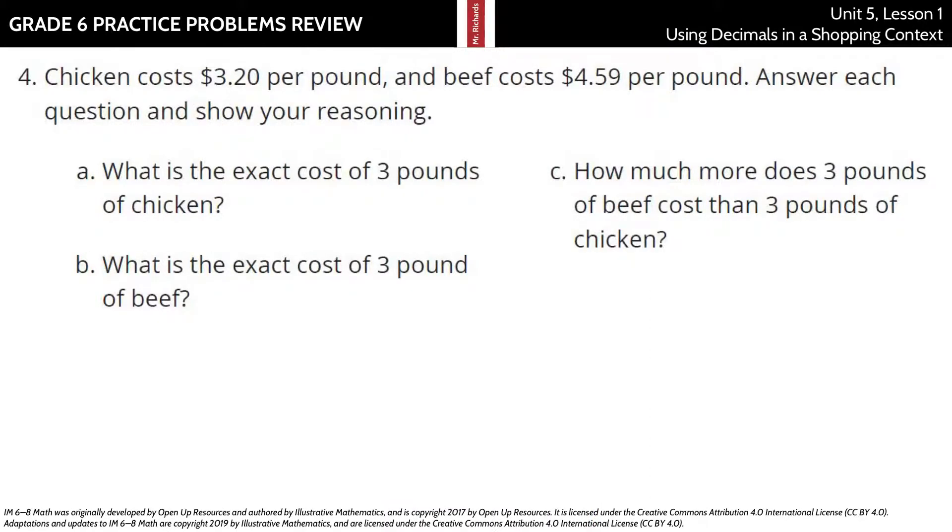In question 4, chicken costs $3.20 per pound, and beef costs $4.59 a pound. Answer each question and show your reasoning.